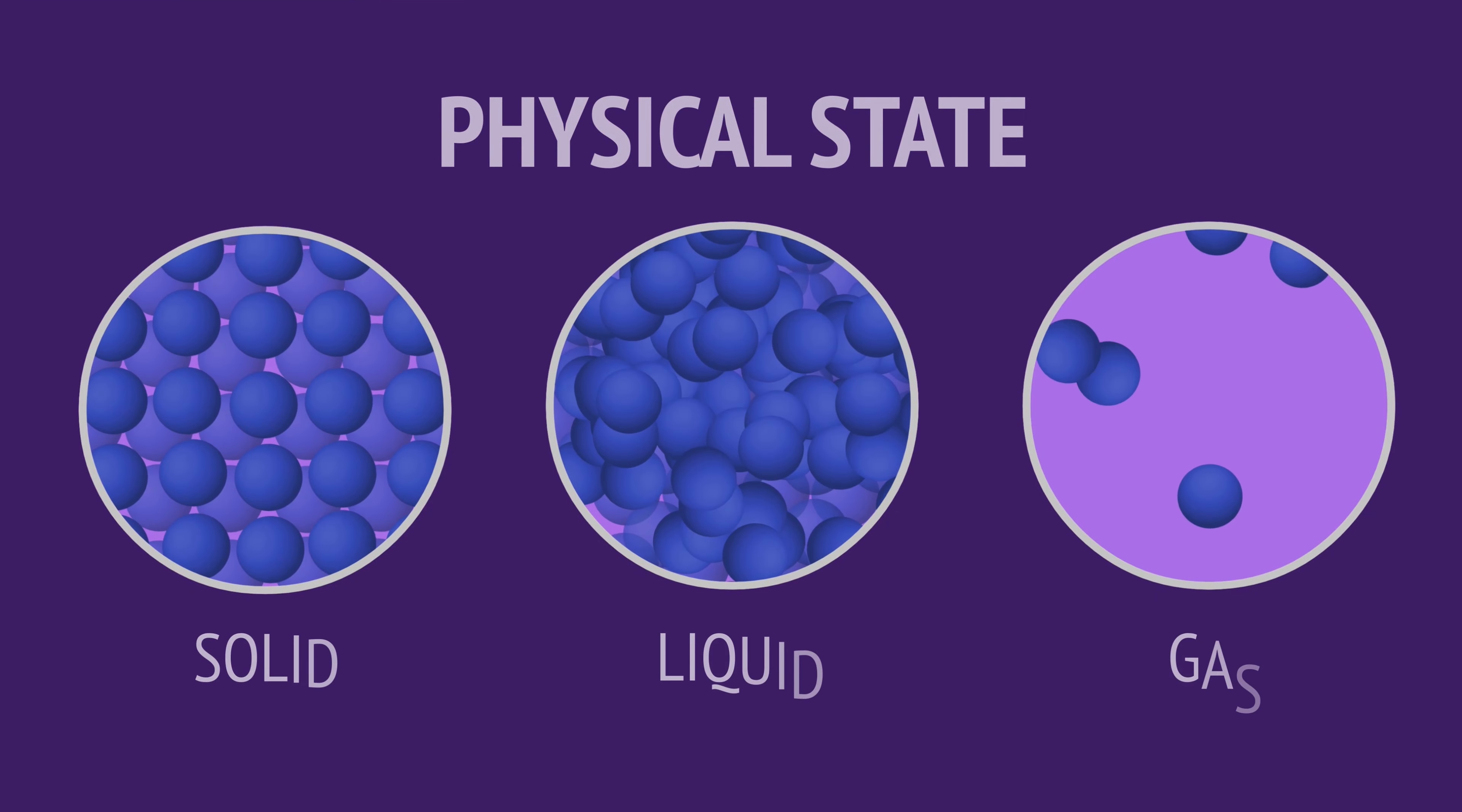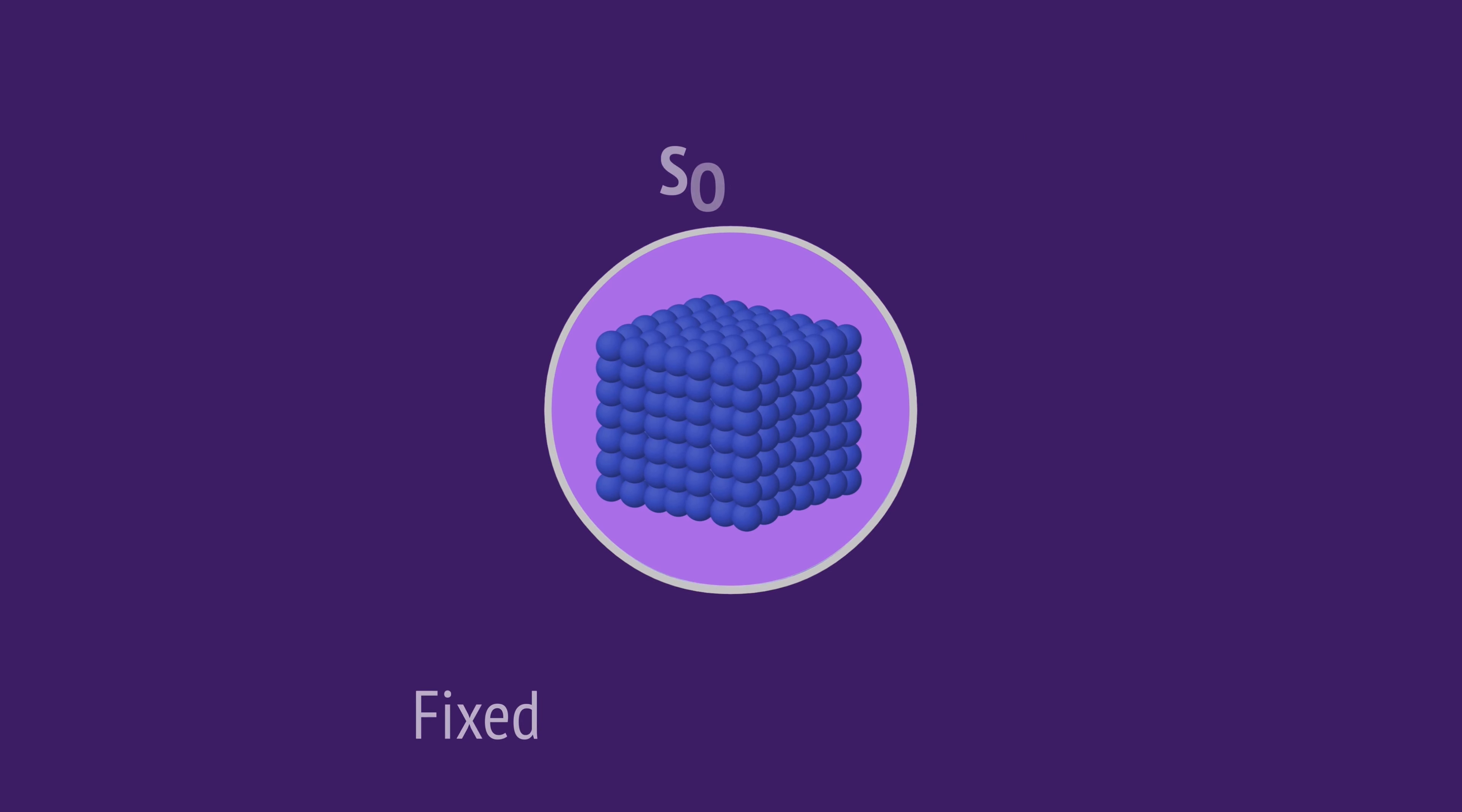So, in this video we've looked at the three main states of matter on Earth. We've seen that solids have a fixed volume and a fixed shape, with the particles locked in place but vibrating.